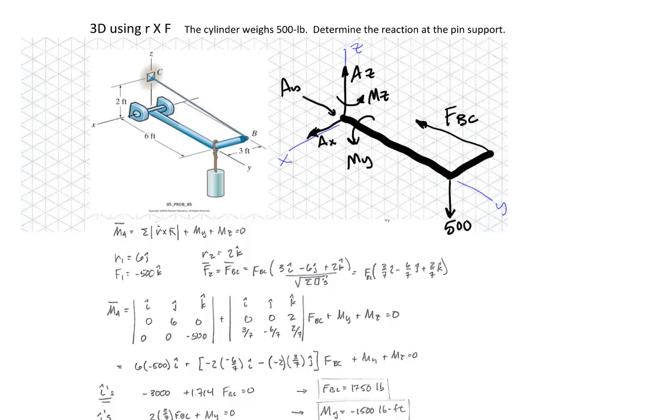First thing we want to do is define the forces. So in this case, that 500 applied is 500 negative K. F2 is going up in this direction, so it's going to go this much in the X direction, that much in the I direction, that much in the K direction. Here's our unit vector as we've defined it.